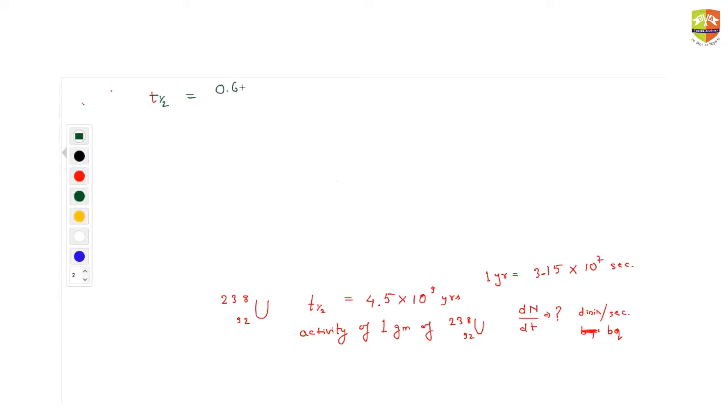Anyone got the answer? Is it 4.8 × 10⁻²¹ Becquerel? No. And |dn/dt| is lambda times n. So lambda is 0.693 [divided by t_half]. n is the number of nuclei. How will you determine how many nuclei are there? It is 1 gram of uranium-238, right? So number of moles is 1 divided by 238, times Avogadro number. Number of nuclei is equal to number of atoms only, isn't it?